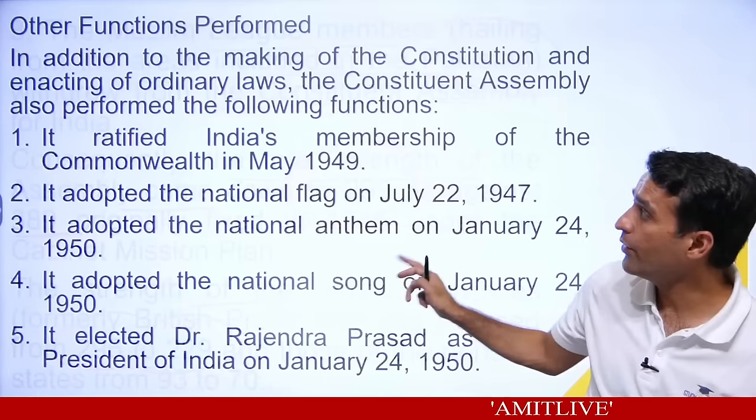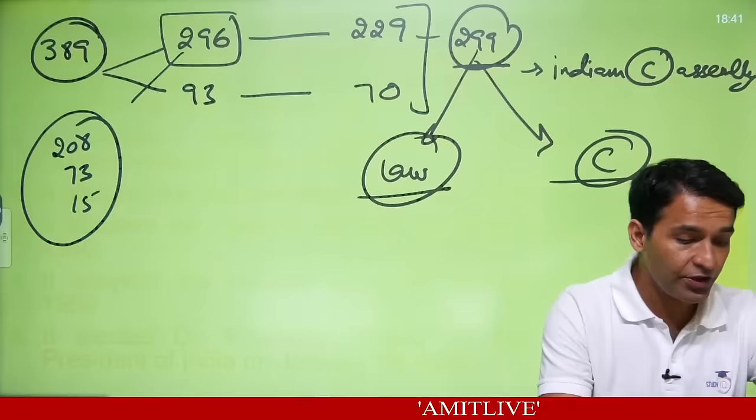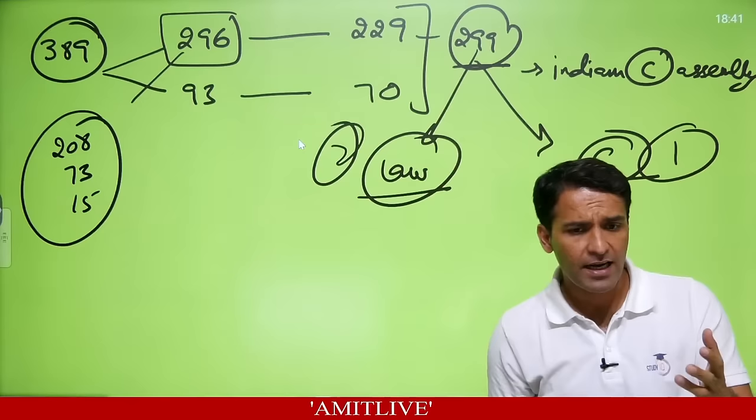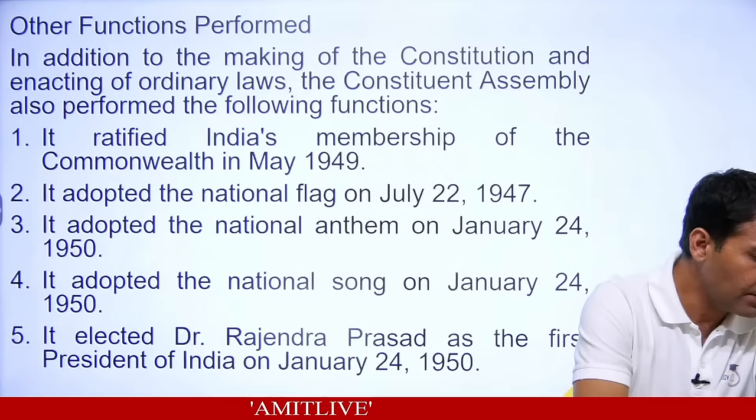Other functions of the Constituent Assembly: these 299 members had five additional tasks — it ratified India's membership of the Commonwealth; adopted the National Flag on July 22, 1947; and more.